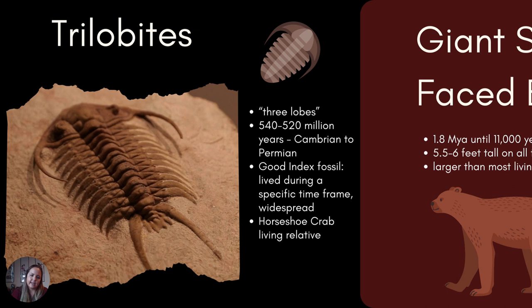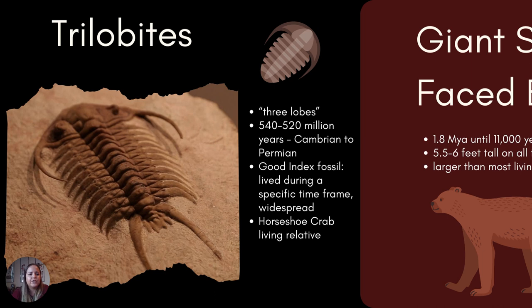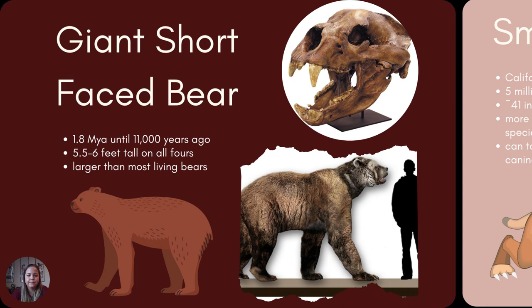Trilobites are really important because they are a good index fossil — something that lived during a very specific time frame but was widespread throughout the globe. The trilobite lived between 540 and 520 million years ago, from the Cambrian to the Permian. While 20 million years sounds like a long time, that's a very specific time frame within Earth's 4.6 billion year history. So if you have a rock that has a trilobite in it, you automatically know a 20 million year time frame for when your sediment formed. The trilobite is named by its three lobes, and the horseshoe crab is its living relative today.